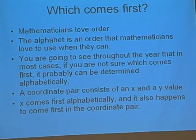Mathematicians love order. The alphabet is an order that mathematicians love to use when they can. A coordinate pair consists of an x and a y-value. X comes first alphabetically, and it also comes first in the coordinate pair.